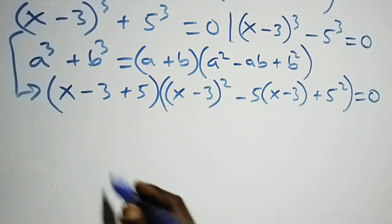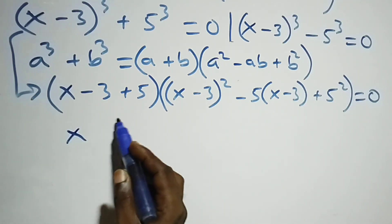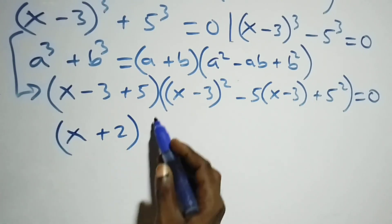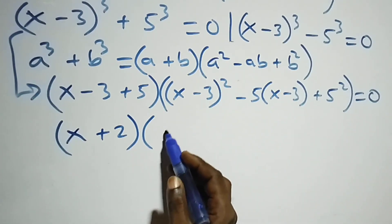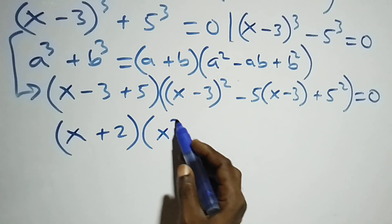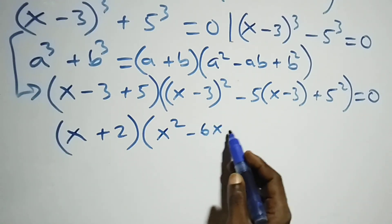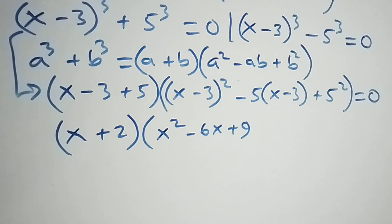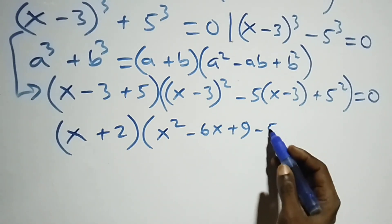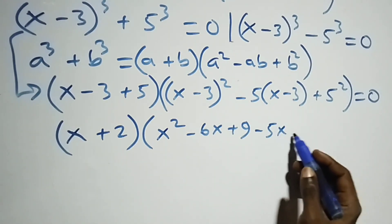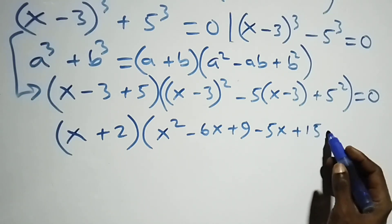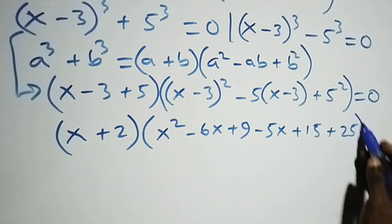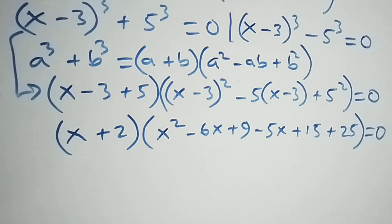That is the same thing as (x plus 2) — since x minus 3 plus 5 gives x plus 2 — into brackets. Expansion gives x squared minus 6x plus 9, then minus 5 open bracket gives minus 5x plus 15, then plus 5 squared, that is 25, equals to zero.